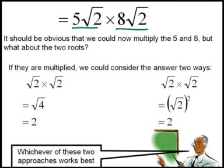And then since we are multiplying we could multiply the 5 and the 8 to give us 40. But when you multiply the two roots you can approach this in two separate ways. You can either say it's √2 times √2 which will then give you the square root of 4.